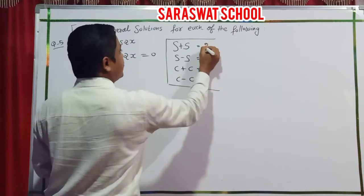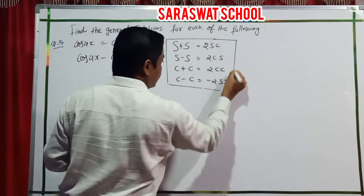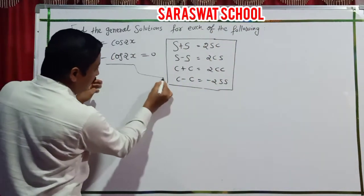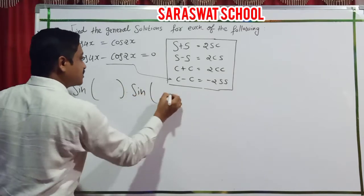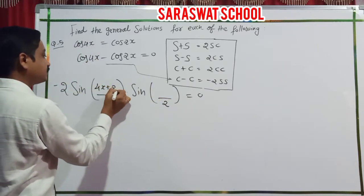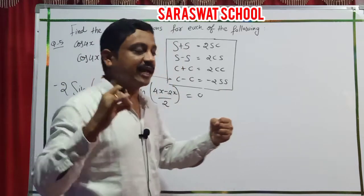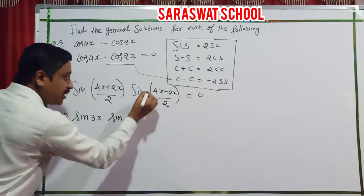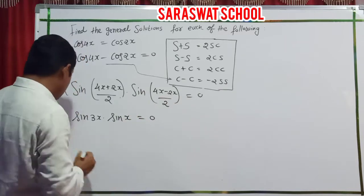Applying the C minus C property: minus 2 sine times sine equals 0. The angles are divided by 2: addition gives (4x plus 2x)/2 equals 3x, and subtraction gives (4x minus 2x)/2 equals x. So we get: minus 2 sine 3x times sine x equals 0.